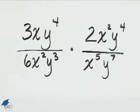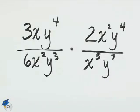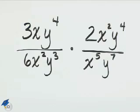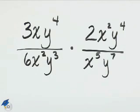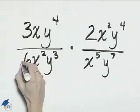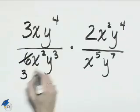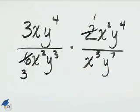We'll multiply these two fractions by cross-dividing any common factors. The 6 and the 2 can be cross-divided. 6 will become 3, 2 will become 1.